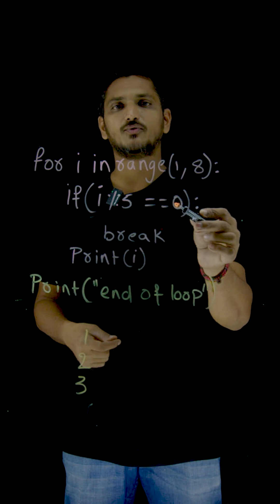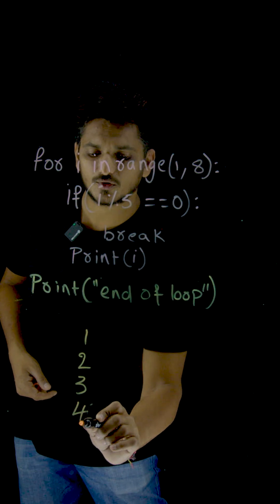Next, i is equal to 4. 4 modulus 5 not equal to 0. Again, 4 is going to be displayed.